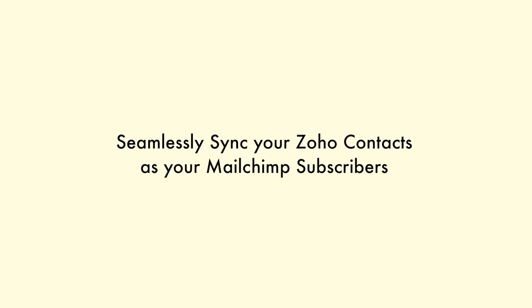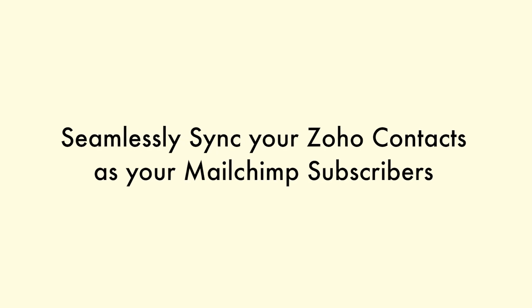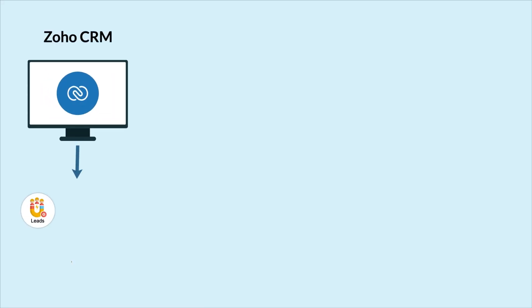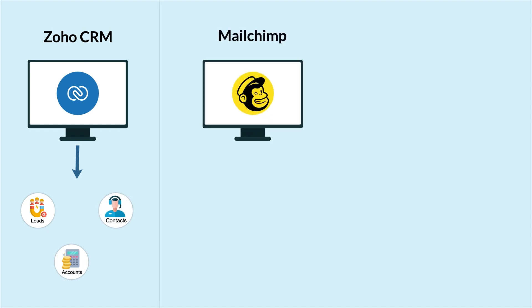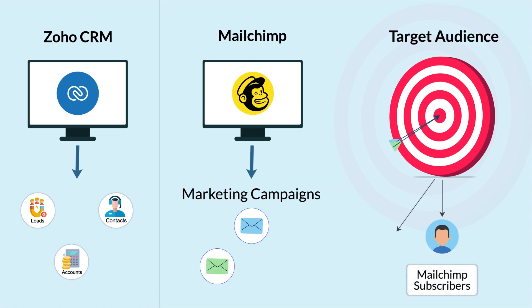In this video, I will show you how to sync your Zoho CRM contacts as your MailChimp subscribers effortlessly. Every business uses the Zoho CRM to collect, store, and manage customer records, and they interact with customers and promote their business via email marketing tools like MailChimp. With MailChimp, you can effortlessly send mass emails and marketing campaigns to all of your MailChimp subscribers.